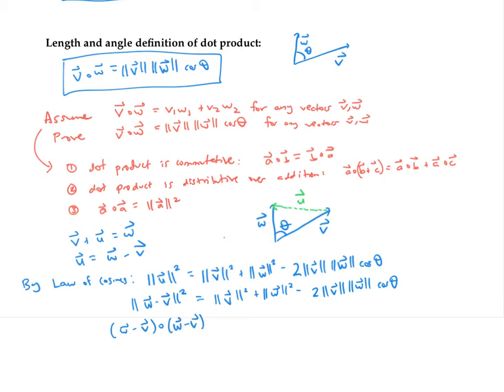Continuing, I can write the norm of v squared as v dot v, and the norm of w squared as w dot w. Now I can use the distributive property on this collection of vectors to get w dot w minus w dot v minus v dot w plus v dot v.